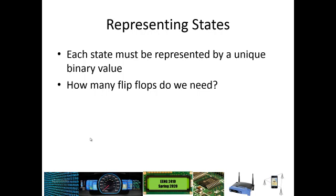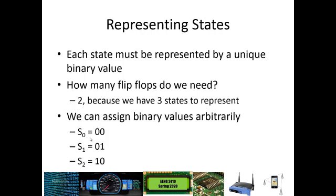Now we're going to take this state table and create a binary state table by assigning binary values to every one of our states. We have three states, so with two bits we can represent all three state values — up to four states with two flip-flops. We'll make this arbitrary assignment: 00 is S0, 01 is S1, and 10 is S2. Later in the course we'll talk about how to choose the binary representation, but for now we're just arbitrarily assigning binary values.